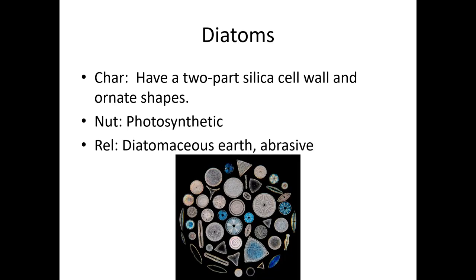Diatoms are some of my favorites because if you look at them under the microscope they're just gorgeous. In fact it used to be a thing wealthy people would do in the 1800s — they would arrange the diatoms on slides and see who had the most artistic arrangement. The cell walls of diatoms are actually made out of glass — that's what silica is, it's glass. What you're seeing is the cell wall in all the different shapes, sizes, and colors — they're kind of like making their own personal stained glass walls, and they're just beautiful.